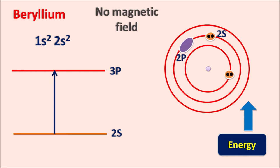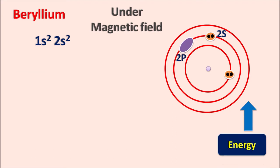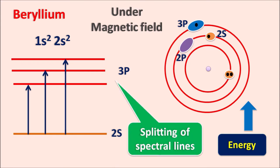Now let us see what happens in the presence of a magnetic field. Under the applied magnetic field, when we supply energy to beryllium, electrons can jump from the 2s orbital to the 3p orbital. But in case of the 3p orbital, we can observe three spectral lines according to three energy states. So three types of transitions are possible in beryllium under the applied magnetic field. This splitting of spectral lines under the applied magnetic field is called the Zeeman effect.